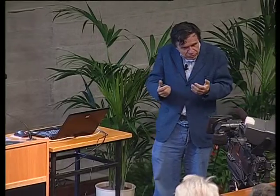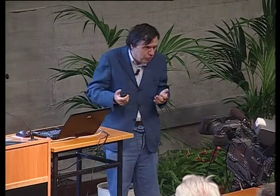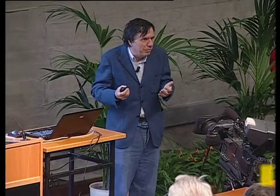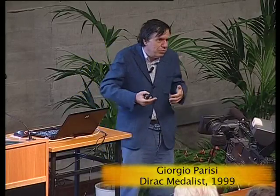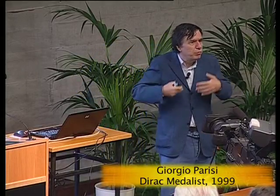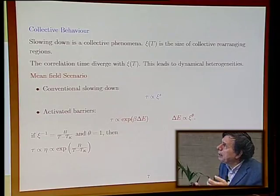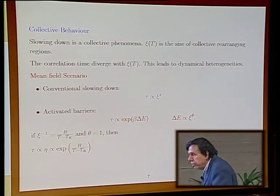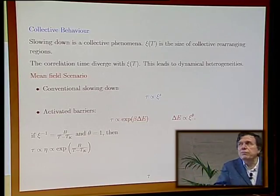Which is the simplest way to explain the fact that the equilibration time is so slow in glasses? The idea is that you have some kind of collective behavior. The fact that the barriers are high are related to the fact that they correspond to the movement of many particles together. This means there should be some large correlation lengths that correspond to the region which should have a cooperative movement.